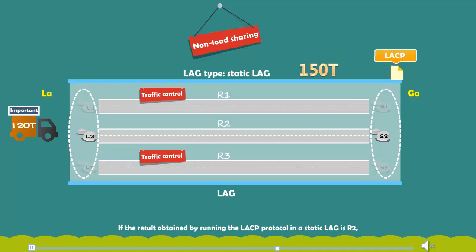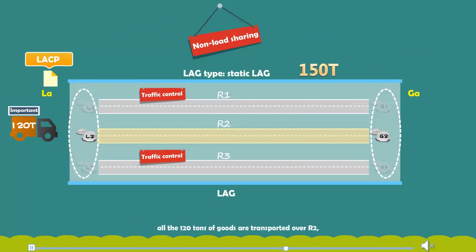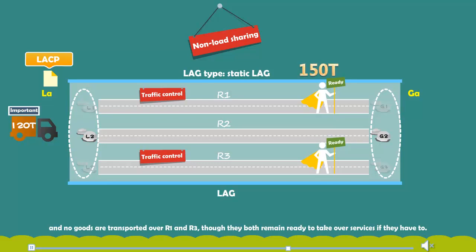If the result obtained by running the LACP protocol in a static LAG is R2, all the 120 tons of goods are transported over R2 and no goods are transported over R1 and R3, though they both remain ready to take over services if they have to.